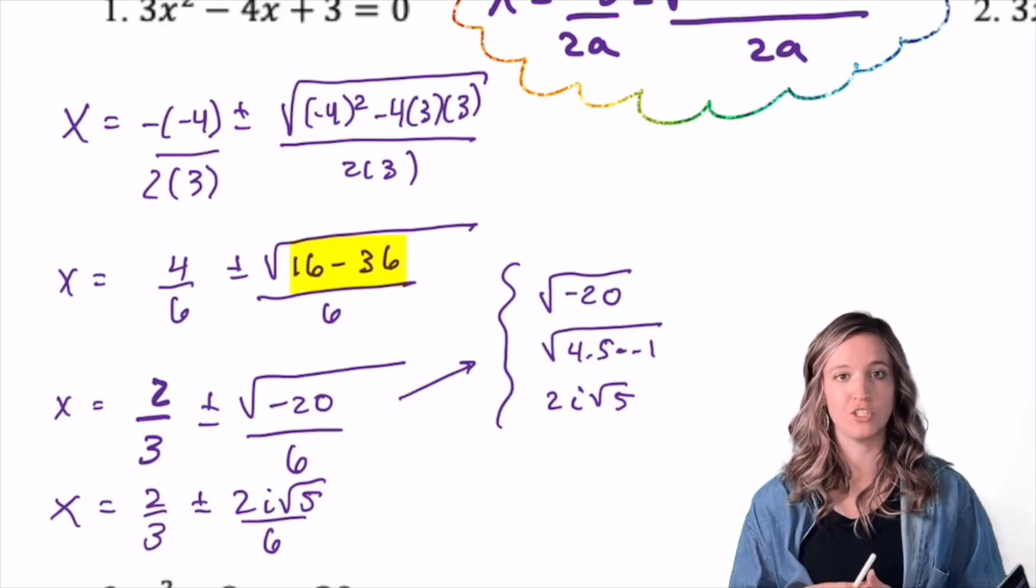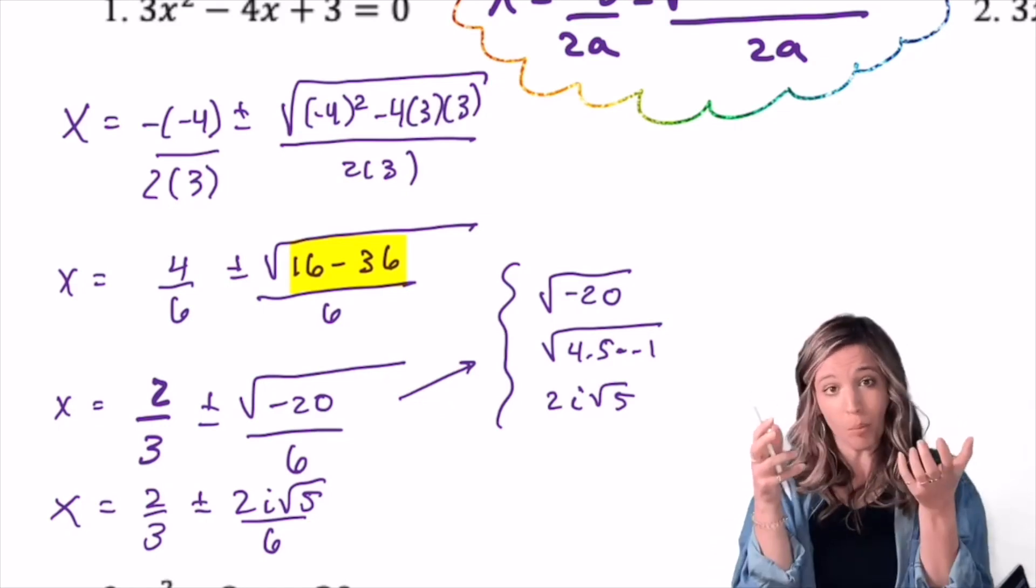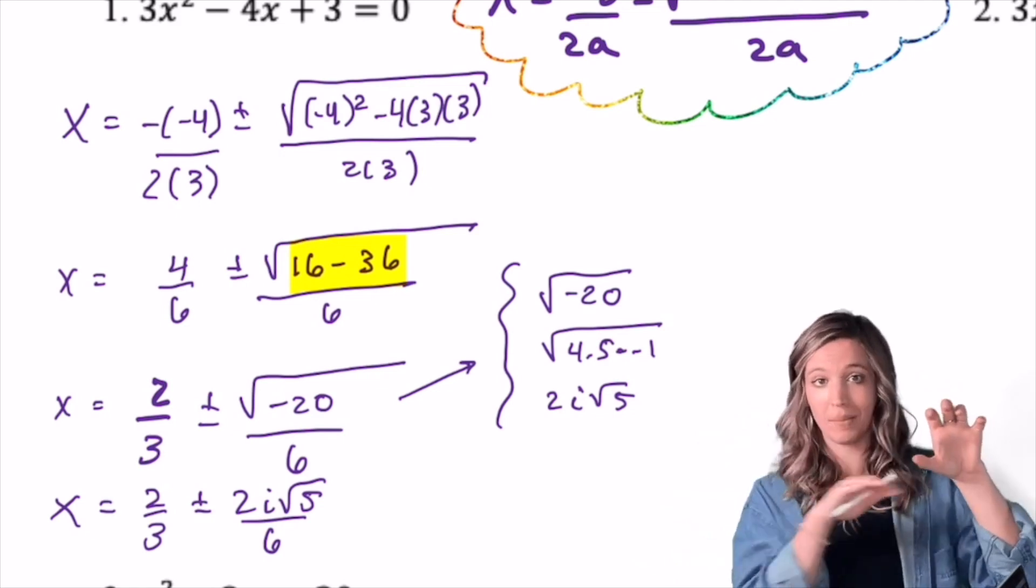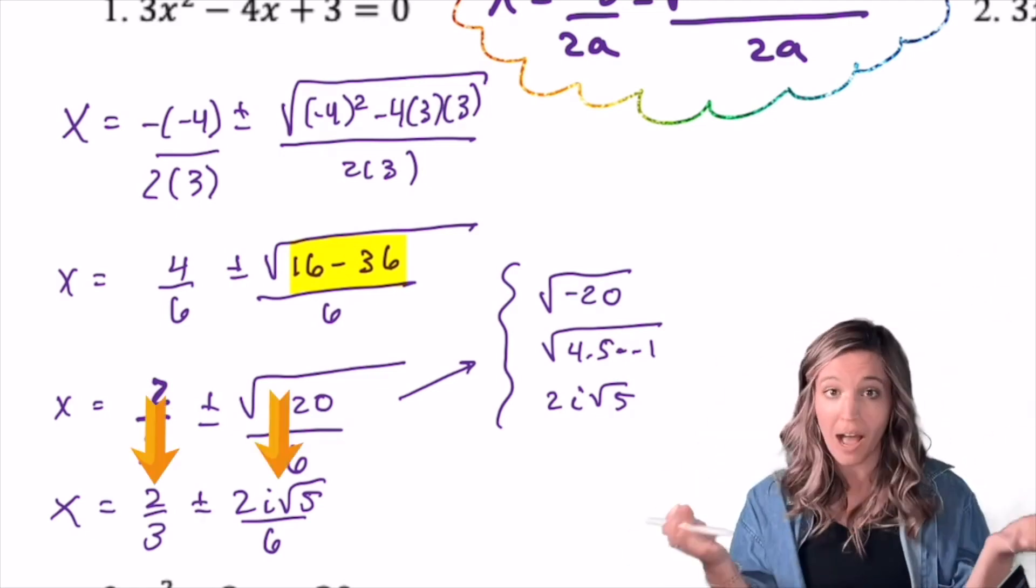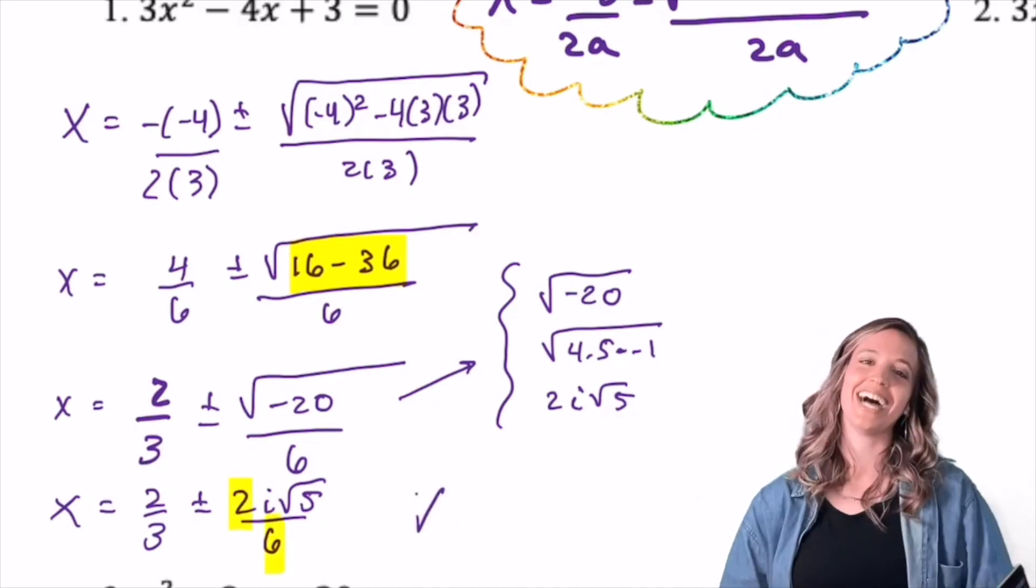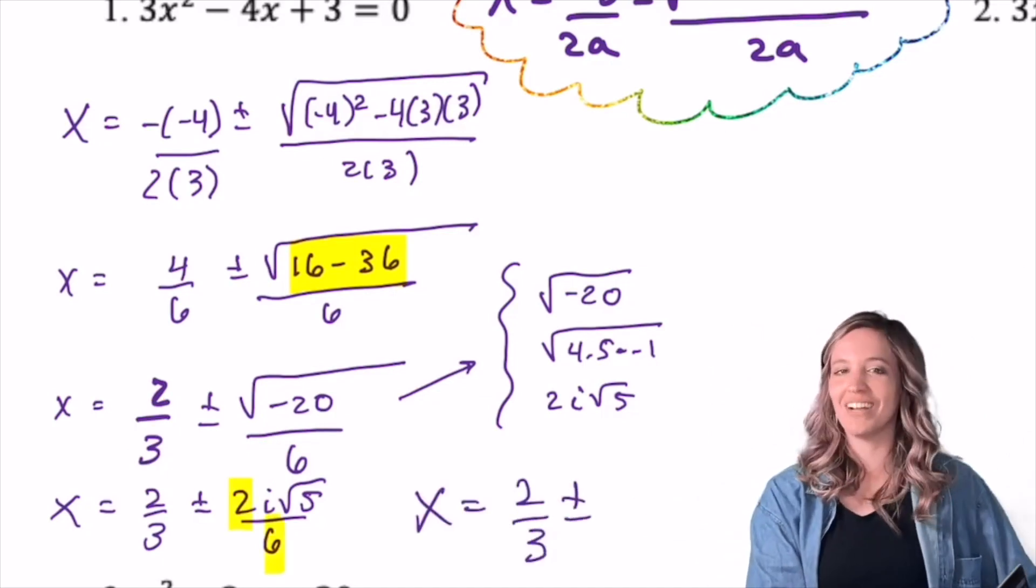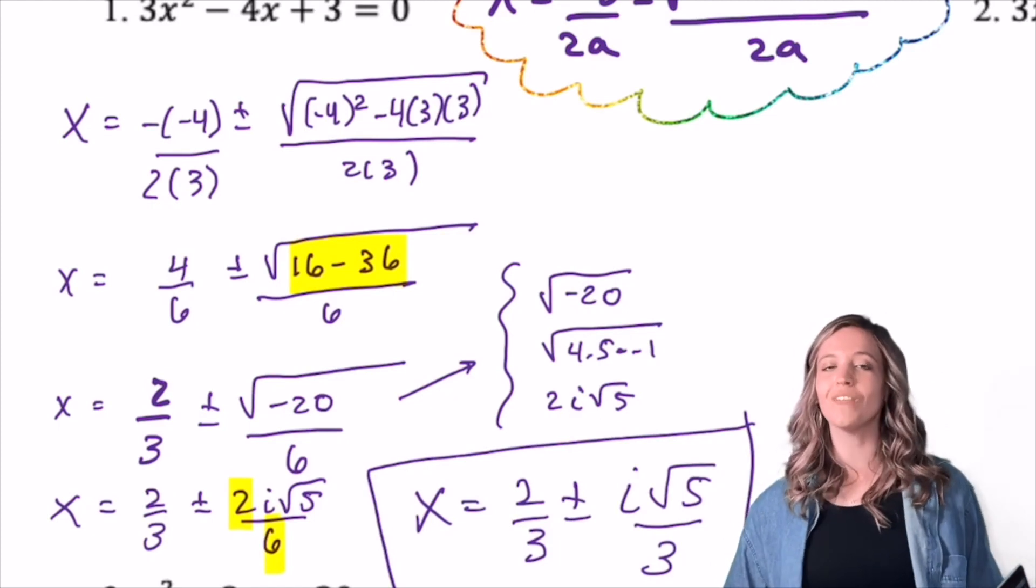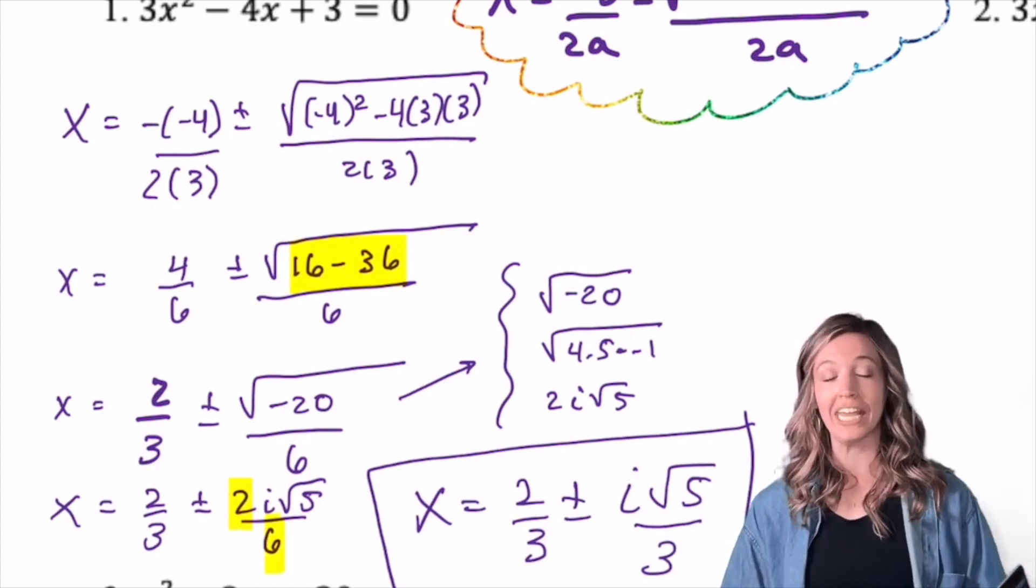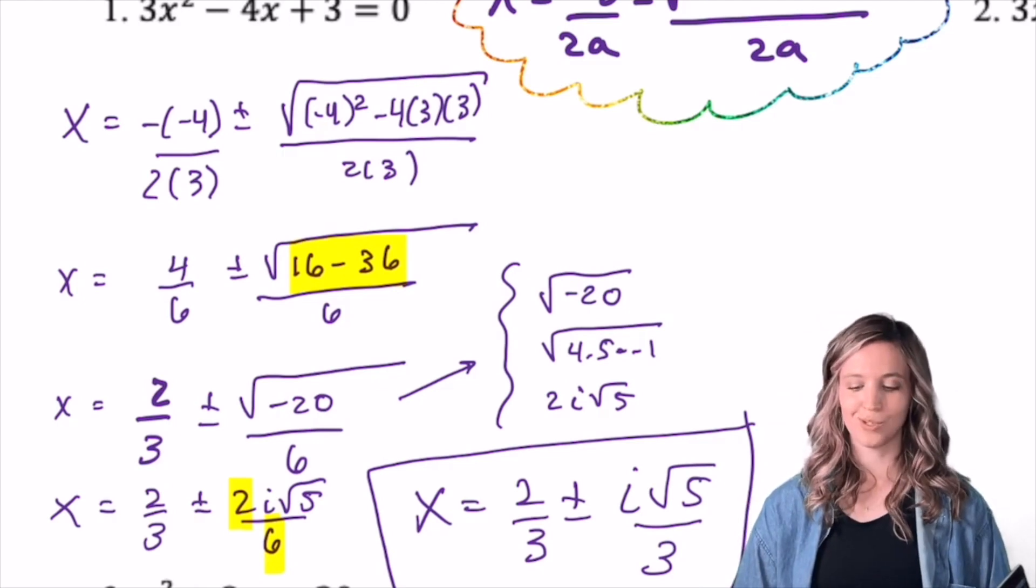After doing my side note and simplifying my square root, I end up getting 2/3 ± 2i√5/6. Now, there's still some more simplifying I can do, but let me stress here, it was important that we separated that denominator and have the real part plus the imaginary part. That's how we write complex numbers. The last thing I need to simplify is the 2/6 into 1/3. So final complex answer, 2/3 ± i√5/3. So we have 2 complex solutions.